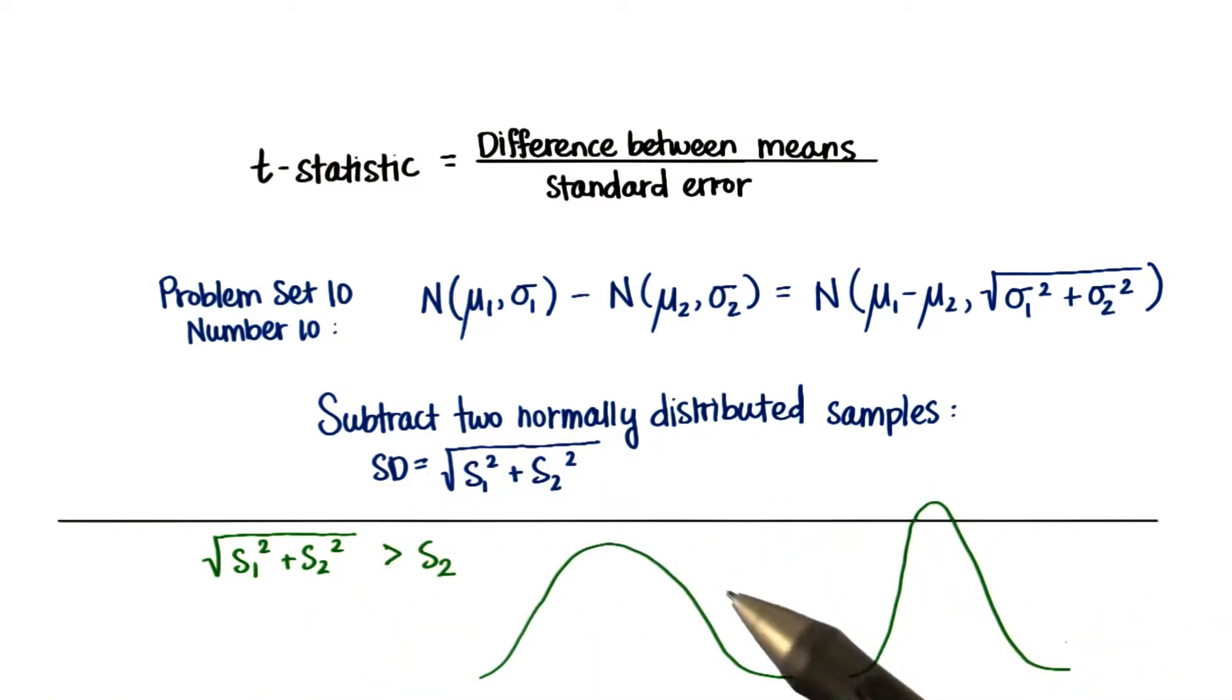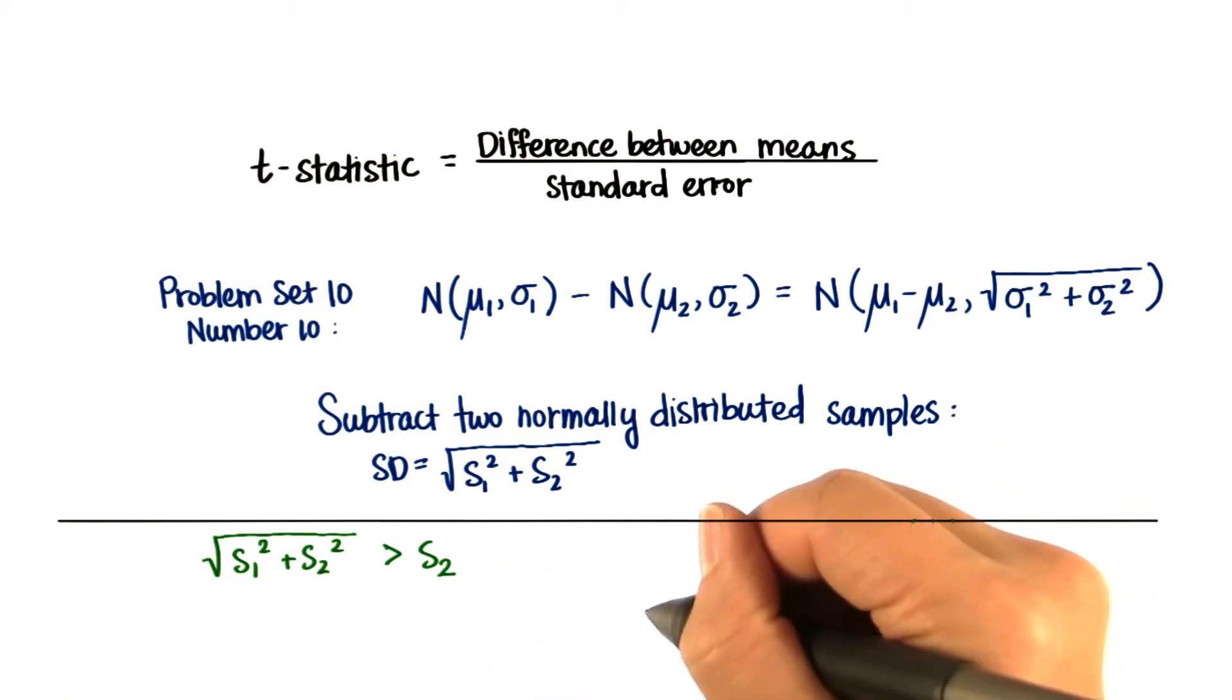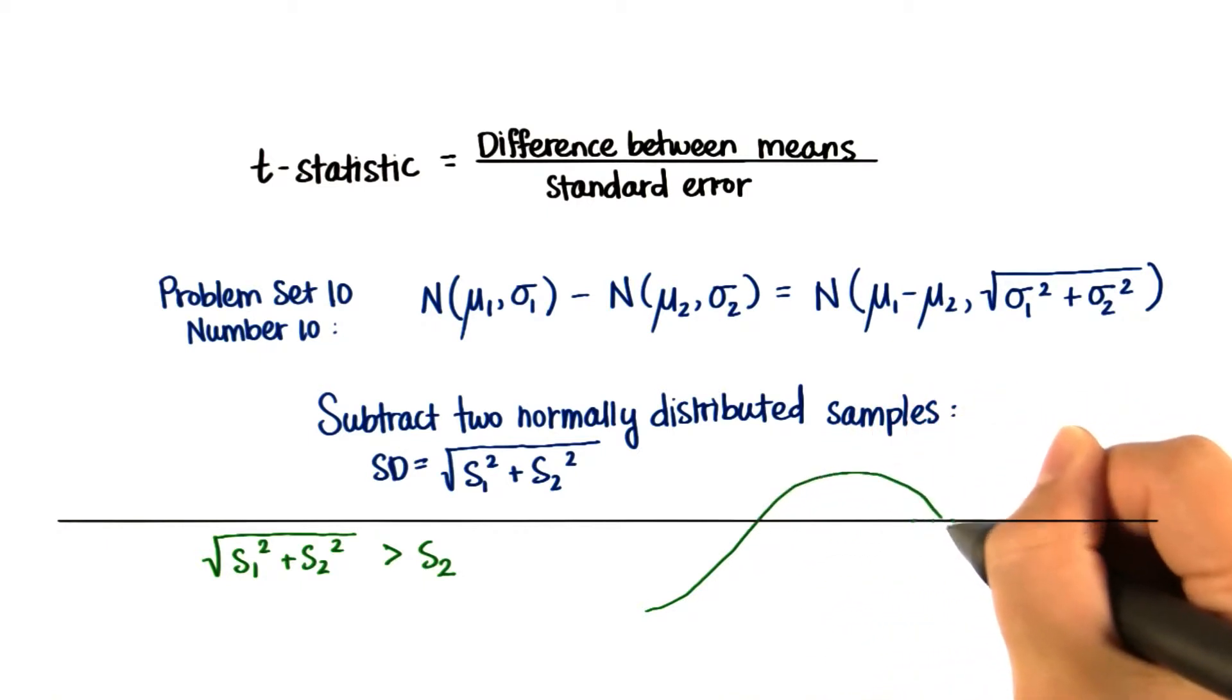You can think about it intuitively, because if we have two different distributions, and then we subtract this data from the other, there's going to be even more error than what exists in each individual distribution. Like we might subtract this data value out here from this one here, or we could subtract a data value down here from a data value here. And then when we combine them, we have a much wider distribution.